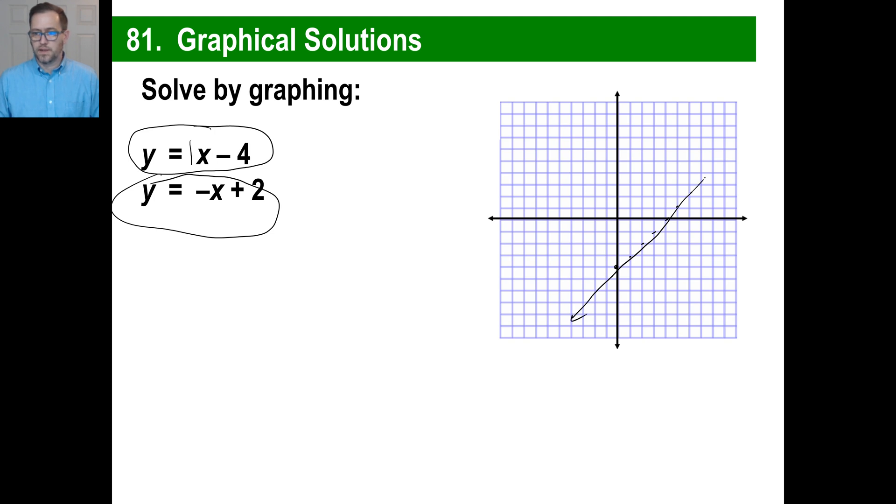The second one, your y-intercept is positive 2. So 1, 2. That's a negative x. So negative 1 over 1. So I'm going to go down 1 and over 1. Down 1 and over 1. Down 1 and over 1. Of course, you notice right there, if you were to draw the line. Of course, if I drew the line, I missed again the whole thing. Anyway, that's the point right here where those two lines intersect.